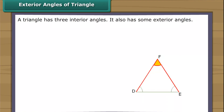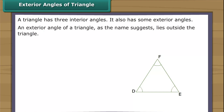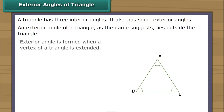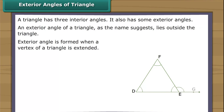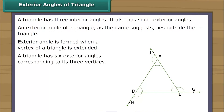A triangle has three interior angles and also some exterior angles. An exterior angle of a triangle, as the name suggests, lies outside the triangle. An exterior angle is formed when we extend a vertex of a triangle. A triangle has six exterior angles corresponding to its three vertices.